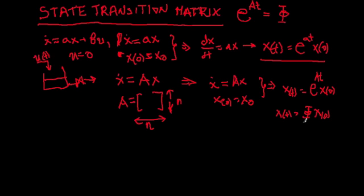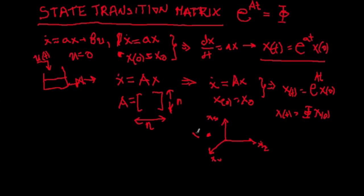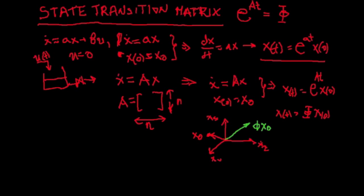Why do we call it the state transition matrix? Consider three-dimensional states x₁, x₂, x₃ given as an initial condition vector x₀. This matrix transfers the initial position from x₀ to the following position x(t). So this position is phi multiplied by x₀, which equals x(t). That is where this name is coming from.